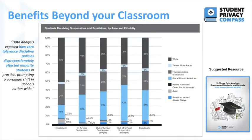Leveraging student data also holds immense benefits beyond the classroom. Data analysis conducted on student data, including school discipline data, exposed how zero tolerance discipline policies disproportionately affected minority students. One specific finding was that while Black children made up 18 percent of preschoolers, they accounted for more than 40 percent of out-of-school suspensions. These findings prompted the U.S. Secretary of Education and Attorney General to issue formal recommendations promoting more thoughtful and fair school discipline, which districts have been implementing with significant success.